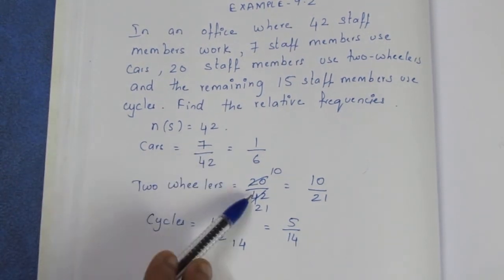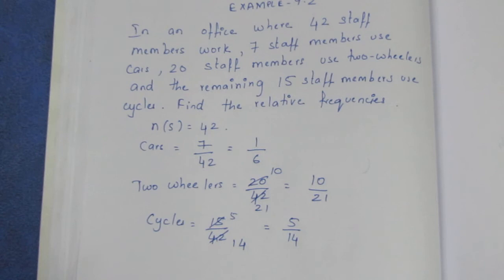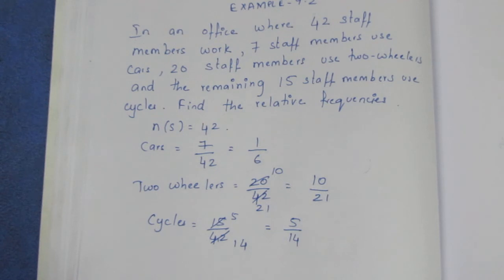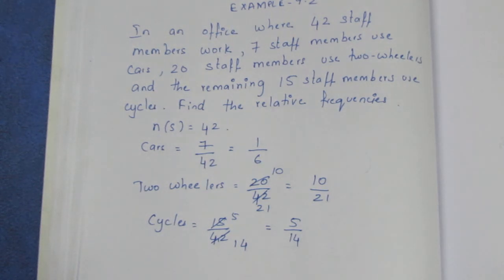If we add all these probabilities together — 1/6 plus 10/21 plus 5/14 — the answer is 1. So if we add all the relative frequencies, the sum equals 1. That's the verification. Thank you.